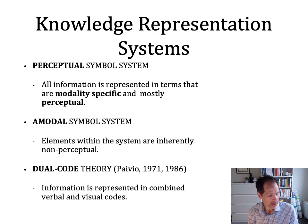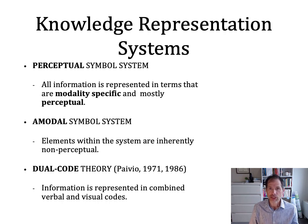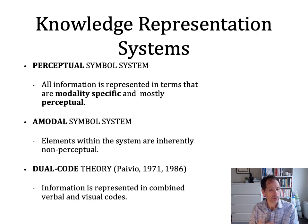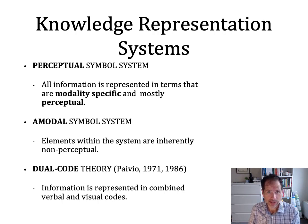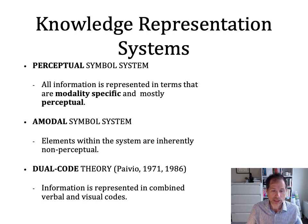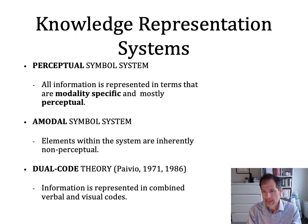And then finally, dual-code theory, which Anderson talks about in the textbook as well, is a theory that suggests that for some concepts — in fact many concepts, many ideas — we have multiple representations. We have a visual or spatial or perceptual representation, but we also combine that with an amodal verbal label for some things. And other ideas might be primarily amodal. So in this dual-code theory, it suggests we have more than one representational system for an idea.